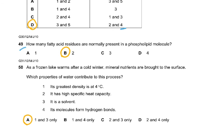Question 49. How many fatty acid residues are normally present in a phospholipid molecule? Just two. That's why you make these two legs and we have this face here. Question 50. As the frozen lake warms after cold water, mineral nutrients are brought to the surface. Which properties of water contribute to this process? It's 1 and 3, the greatest density and its molecules form hydrogen bond. But this is now being removed from the present syllabus. So, you don't have to worry about this. That finishes this cell membrane MCQ topical. And I hope this is helpful and becomes easier for you to do these questions. Thank you very much.